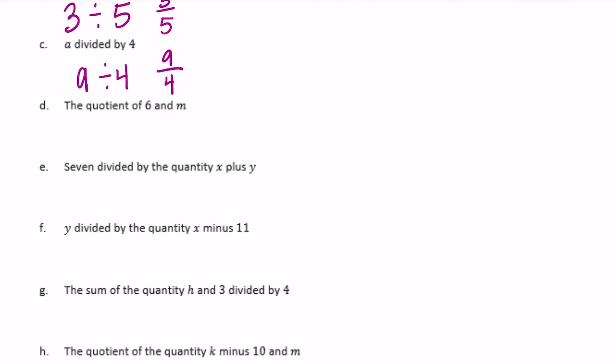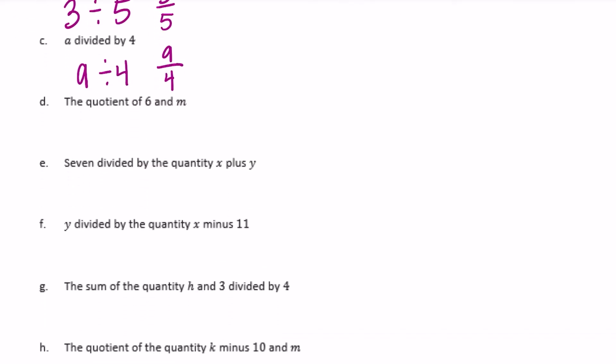The quotient of 6 and m: quotient means the answer to a division problem, so the quotient of 6 and m is 6 divided by m, or as a fraction, 6 over m.